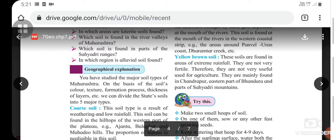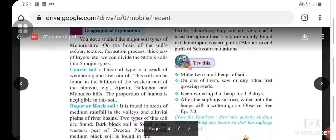Fifth and last is yellow-brown soil. These soils are found in areas of extreme rainfall. They are not very fertile and therefore not very useful for agriculture. They are mainly found in Chandrapur, eastern part of Bhandara, and parts of Sahyadri mountains.